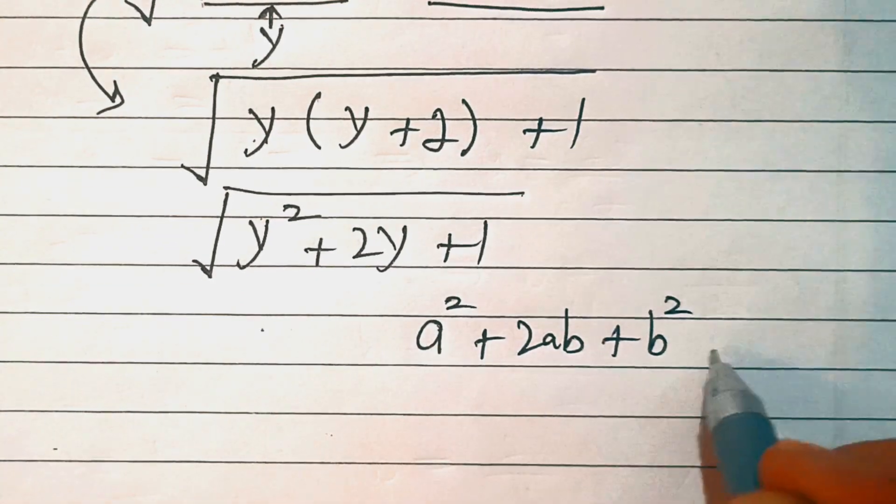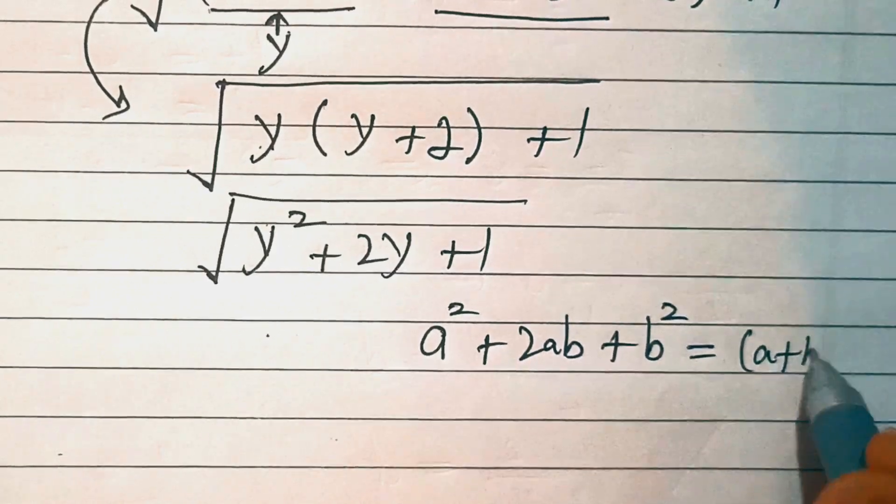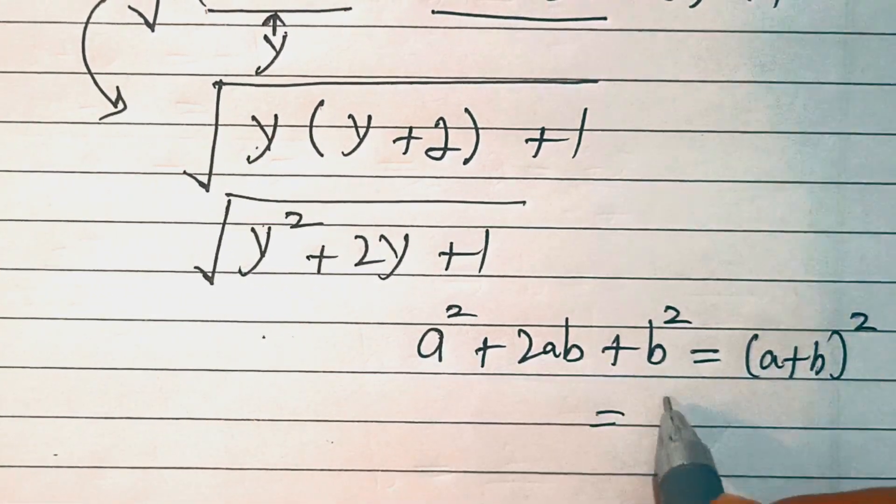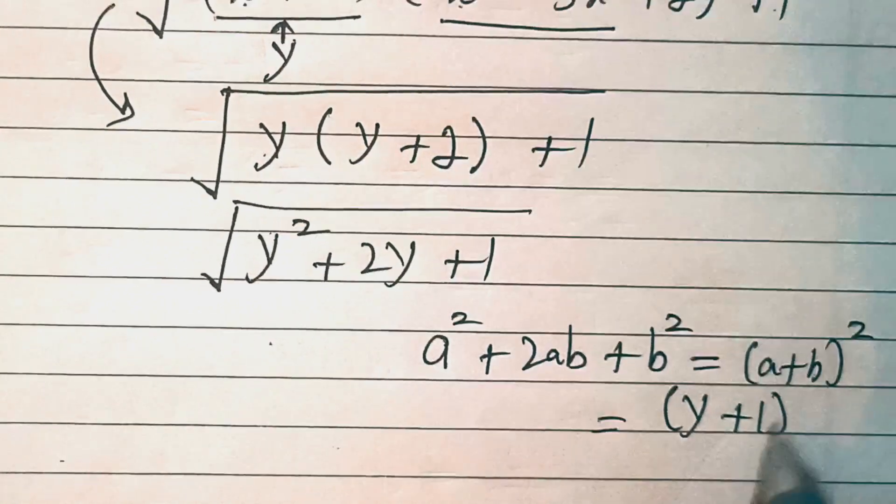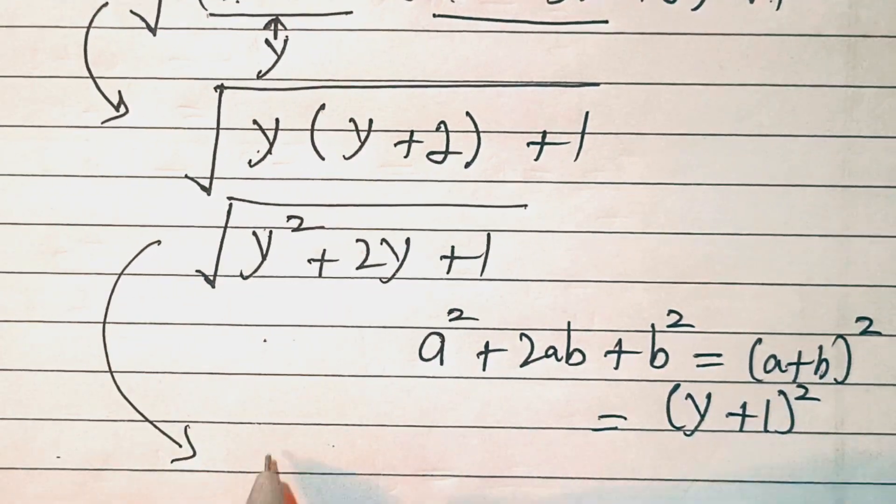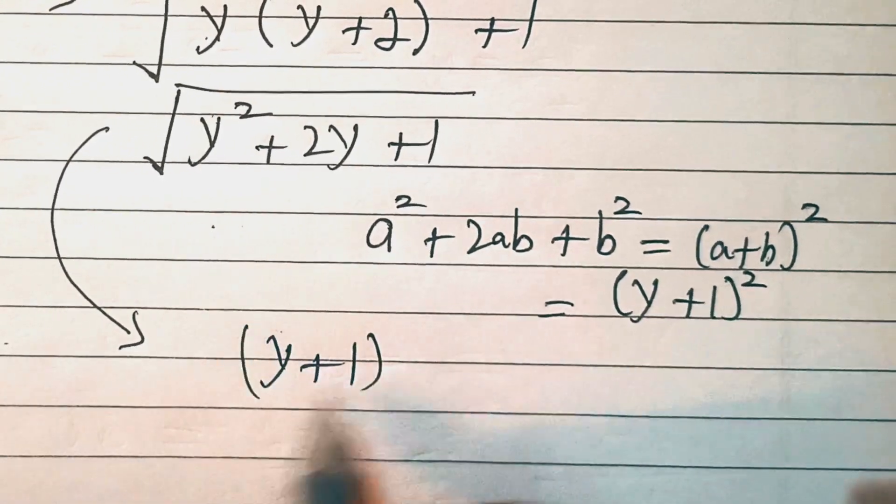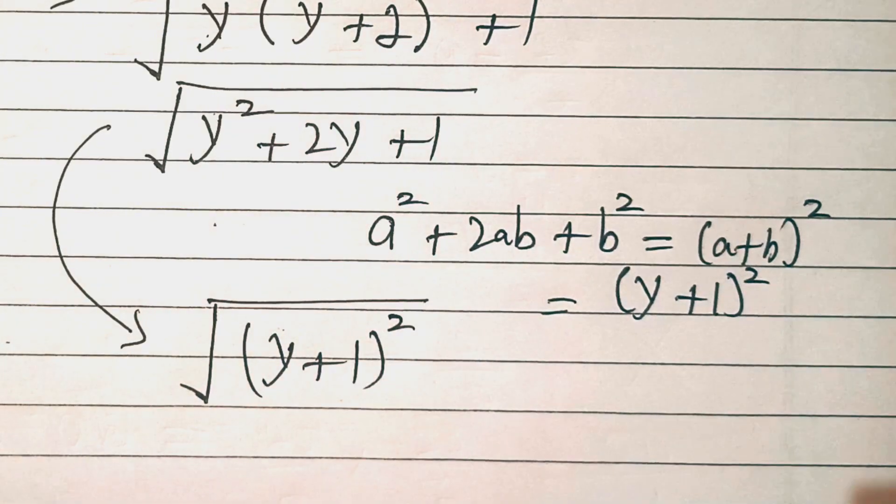Which is equal to a plus b whole squared. And here we have a equal to y and b equal to 1 whole squared. So this will be written as y plus 1 whole squared, whole square root.